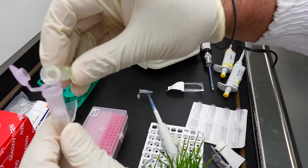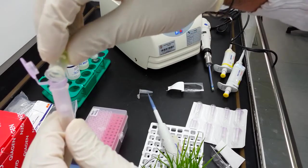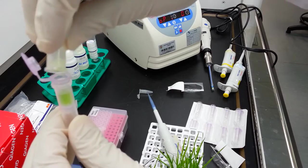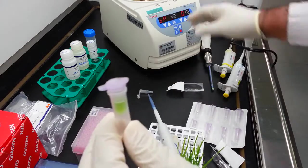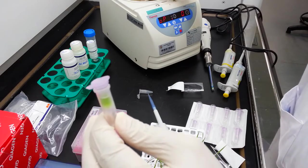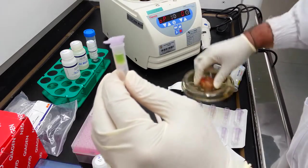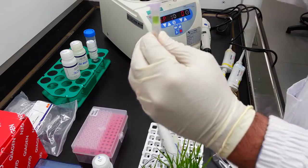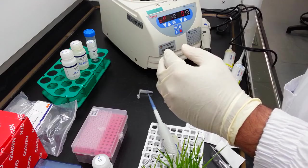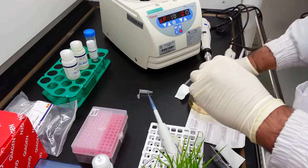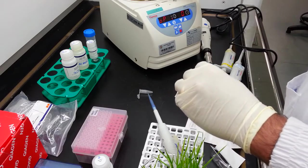Transfer this lysate into the upper column and we now can proceed to centrifugation. I have set this centrifuge to 12,000 G for one minute.